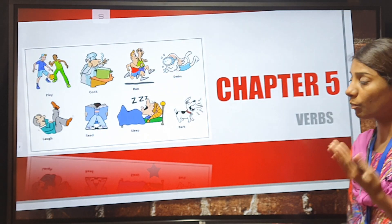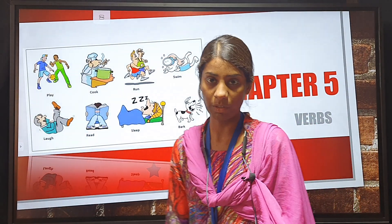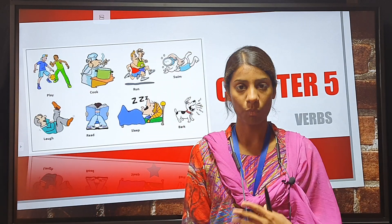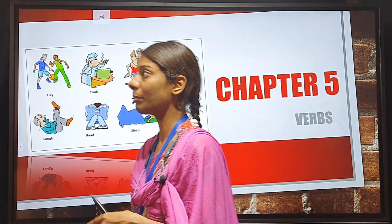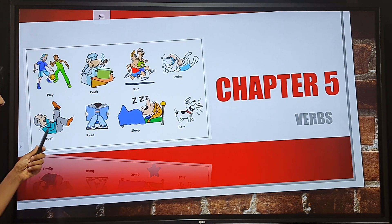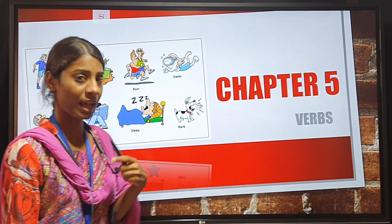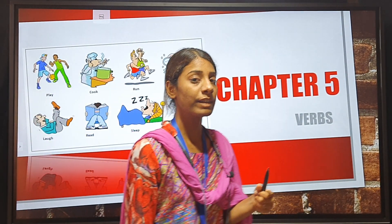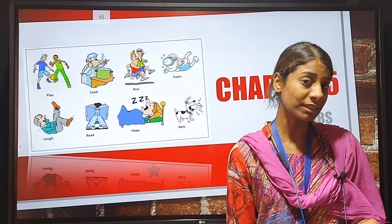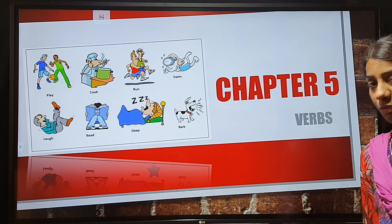So what do we mean by the word verbs? When something is happening, when someone is doing something, or when someone is possessing something, that is known as a verb. Here are some examples: play, cook, run, swim, laugh, read, sleep, bark. These are examples of verbs. When someone is doing something, or when something is happening, or when someone is possessing something, that is known as a verb.